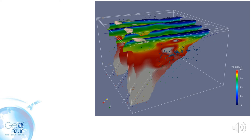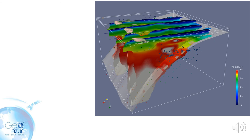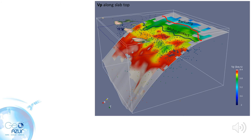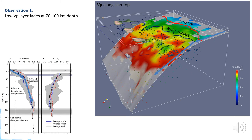We can use the Vp model together with other constraints from multichannel seismic profiles, from receiver functions, from the location of flat thrust earthquakes, to pick the top of the subducting slab. We can then use this surface to extract the slab velocities from the model. Looking at the lateral and depth variations of Vp along this surface, Vp increases initially quite rapidly down to the mark of contact, probably because of compaction and expulsion of pore fluids. Then Vp increases more slowly, reaching 8 to 8.5 km/s at 70 to 100 km depth. This is where the crustal low Vp layer fades and transitions into high velocities, which we interpret as the depth range where crustal eclogitization happens.